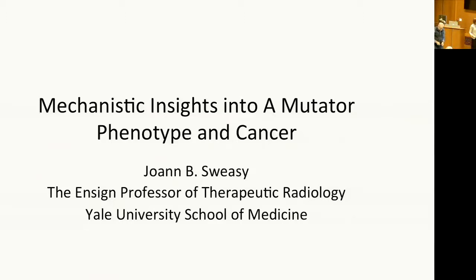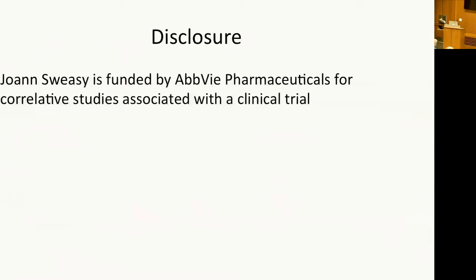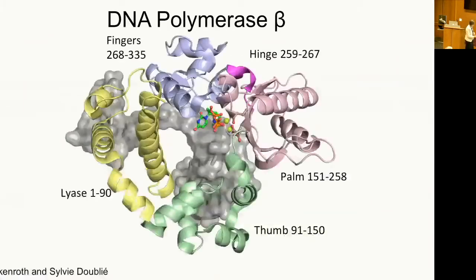It's a pleasure to give a talk to you today, and I'm actually going to go back to my biochemical roots. I'm going to talk about some mechanistic insights into a mutator phenotype and cancer. This is one of my favorite molecules — I have two favorite molecules: one of them is RecA protein, and the second one is DNA polymerase beta. This has more to do with cancer probably than RecA protein.